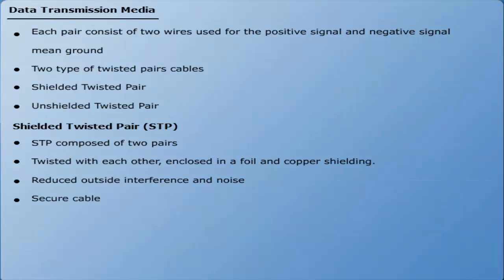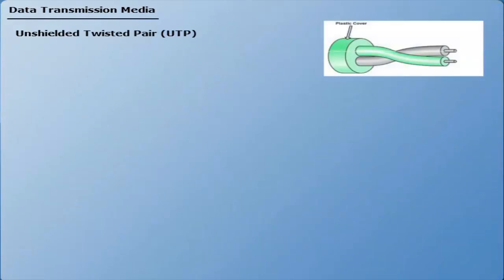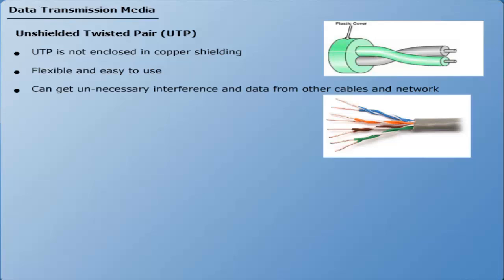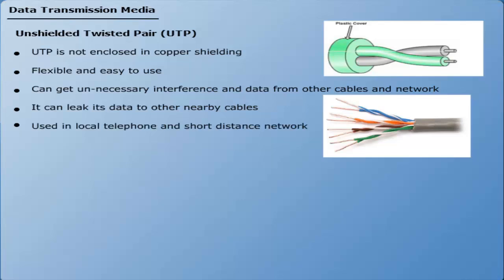Unshielded twisted pair (UTP) cable is not enclosed in copper shielding. UTP cable is usually very flexible and easy to use; however, it can receive unnecessary interference and data from other cables and networks. A disadvantage is that signals traveling through UTP may leak to nearby cables. UTP cables are used in local telephone communications and short distances up to one kilometer.